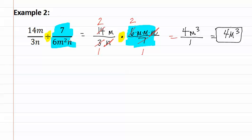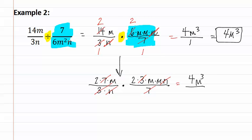Remember, if you're still having a difficult time seeing those factors that divide out, you can always write out the factors using their prime factorization. It should be two times seven times m over three times n and two times three times m times m times n over seven. And then simply divide out the common factors. This would still give us the same answer of four m to the third.